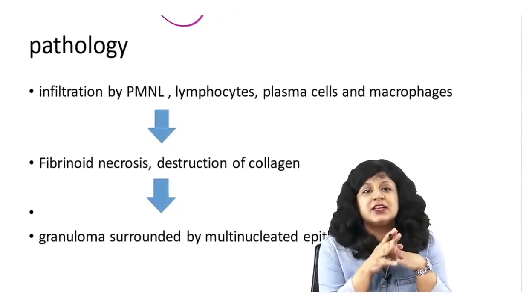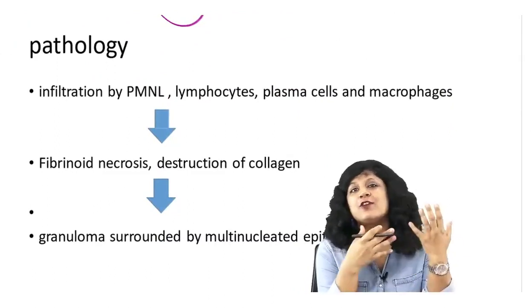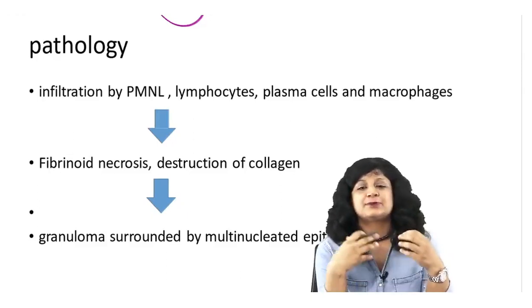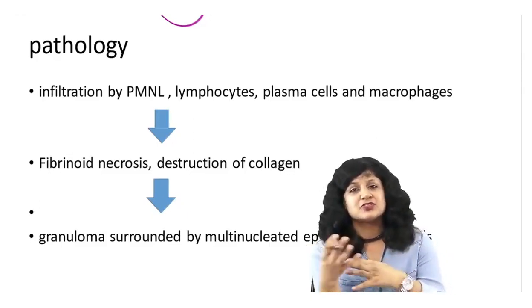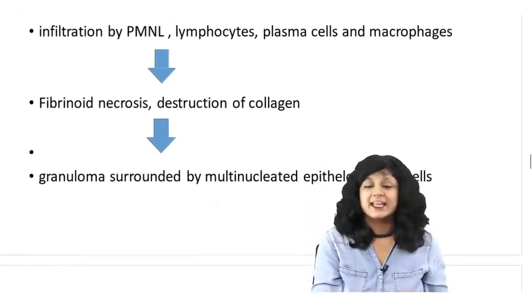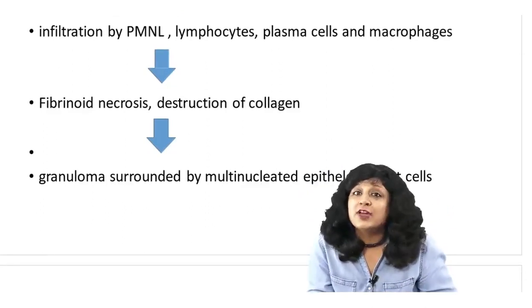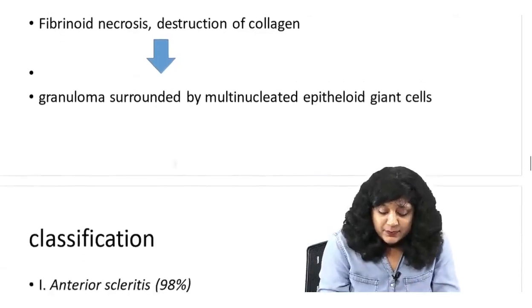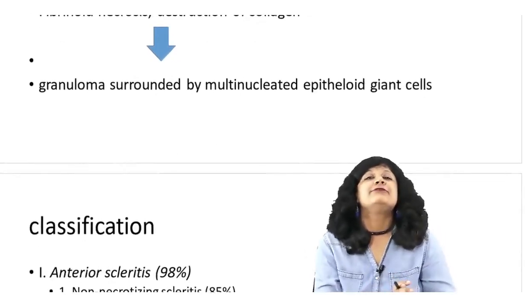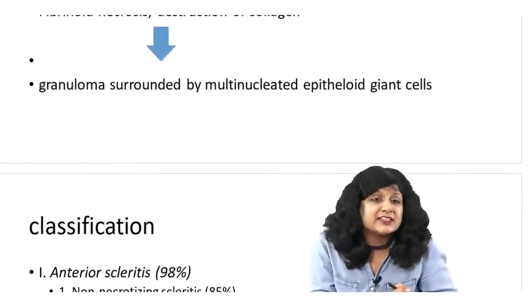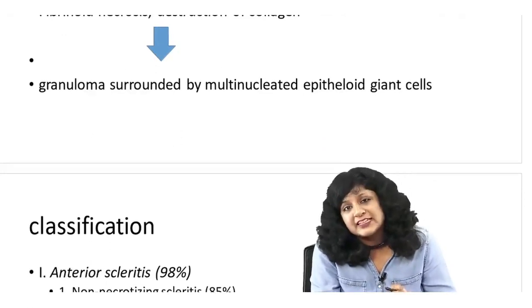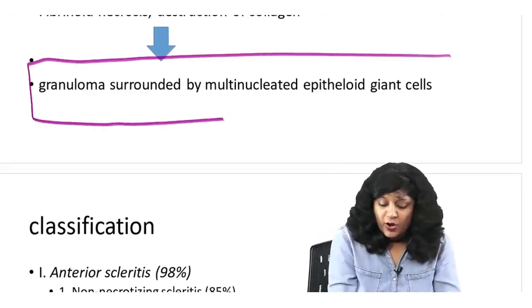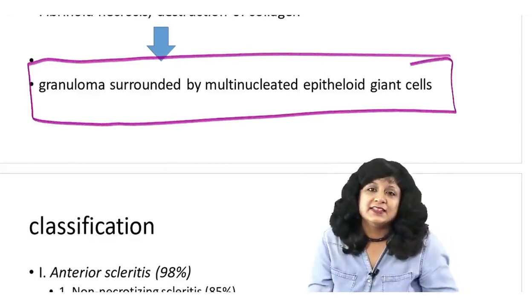The pathology of scleritis: we have a lot of inflammatory cells — polymorphonuclear lymphocytes, plasma cells, macrophages — and lot of fibrinoid necrosis. Basically it is destroying the collagen present in the sclera. Because it is more commonly found in granulomatous diseases, what you are going to find is a granuloma surrounded by epithelioid cells or giant cells.